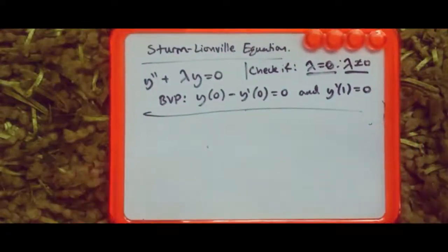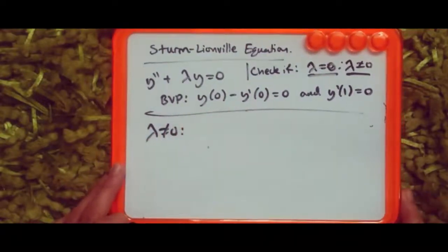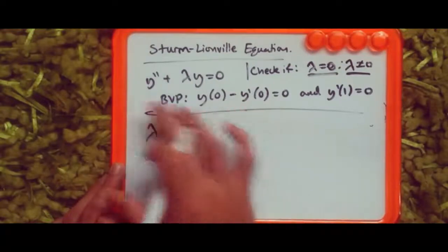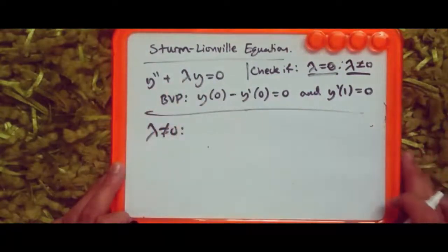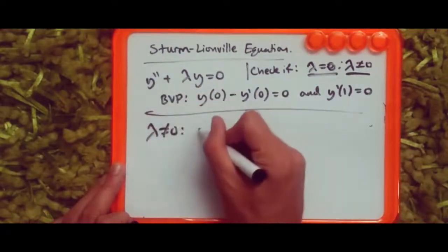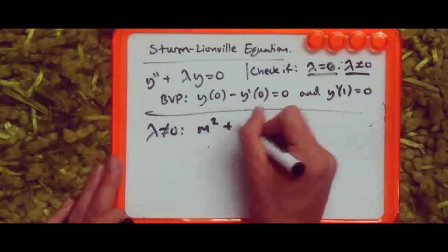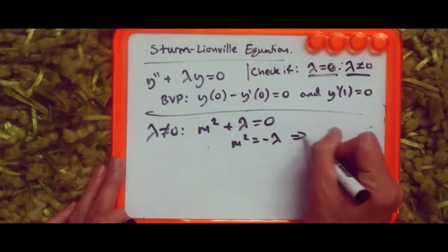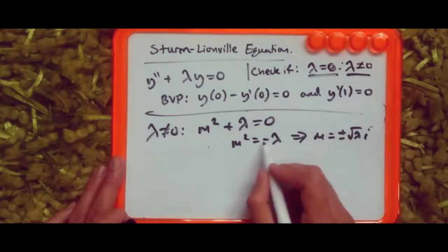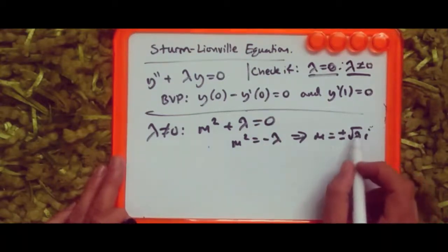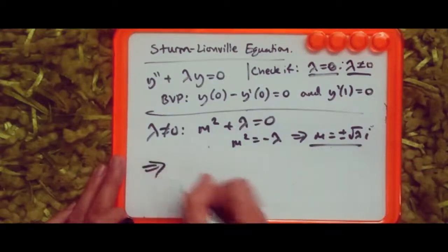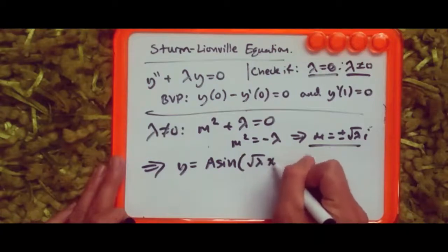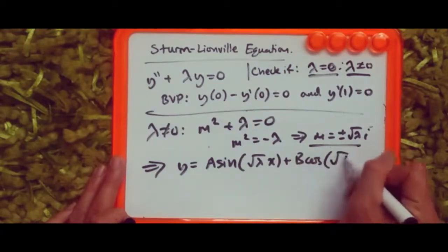Now for the case when lambda is not equal to zero. We solve the second-order ODE where lambda is just a constant. Using the characteristic equation, we let m squared plus lambda equals zero. Solving: m squared equals minus lambda, so m equals plus or minus root-lambda times i, which gives complex roots.